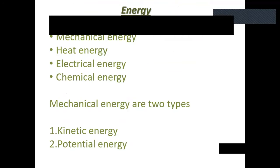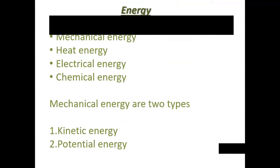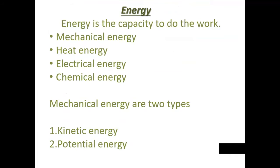Energy is the capacity to do work. When we apply a force there is a displacement, and we need a capacity to do that work — that is known as energy. There are different forms of energy: mechanical energy, heat energy, electrical energy, and chemical energy. Mechanical energy has two types: kinetic energy and potential energy.